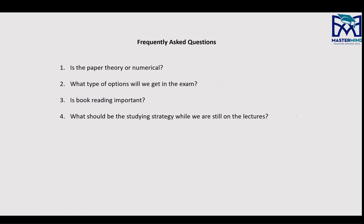One last thing — some common student questions: The paper is mostly theory, but you will get some numbers to analyze. The maximum level of difficulty is performing ratio analysis — this is called analytical procedures — and then drawing conclusions based on those ratios, whether the business is a going concern, doing well, or what audit procedures you need to perform.